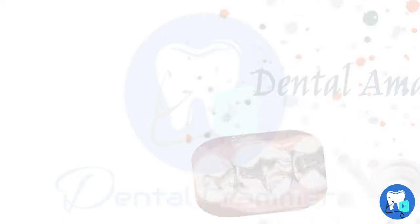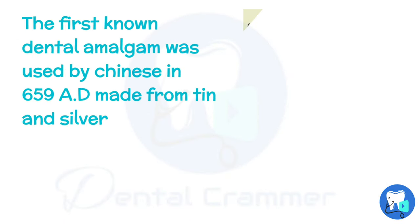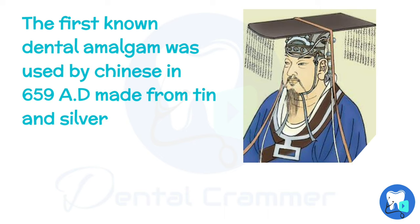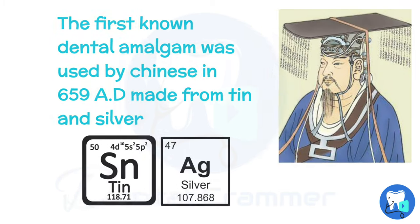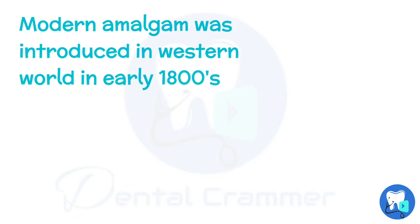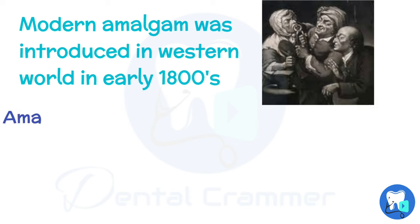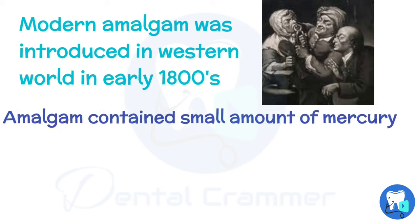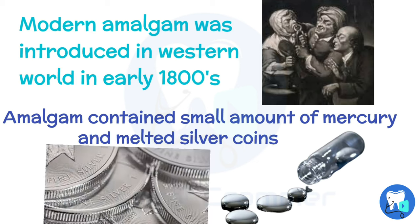The first known dental amalgam was used by the Chinese in 659 AD and it was made from tin and silver. Modern amalgam was introduced in the western world in the early 1800s, and at that time amalgam contained a small amount of mercury which was mixed with melted silver coins.